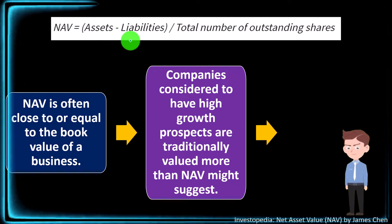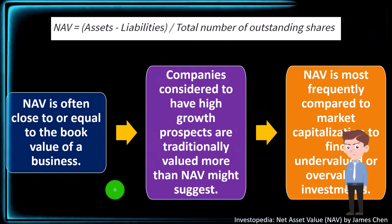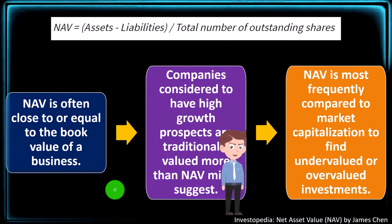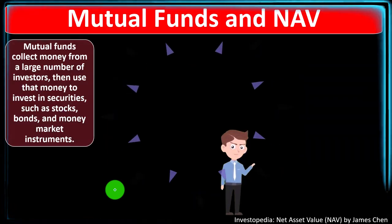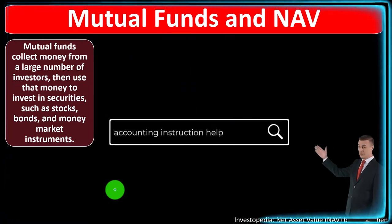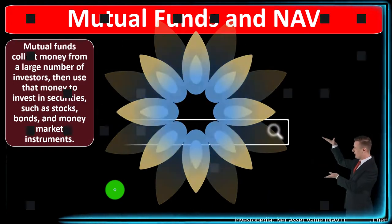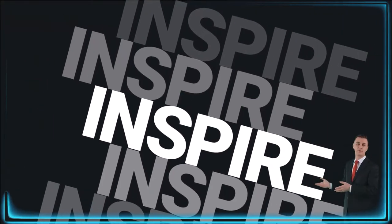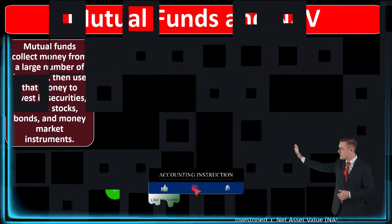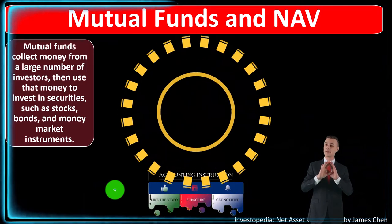Companies considered to have high growth prospects are traditionally valued more than NAV might suggest. NAV is most frequently compared to market capitalization to find undervalued or overvalued investments. When we think about mutual funds and NAV, we're thinking about how pooling money together allows us to diversify and get the benefits of pooled money — being able to invest in different things more so than we could do on our own with a limited amount of resources.